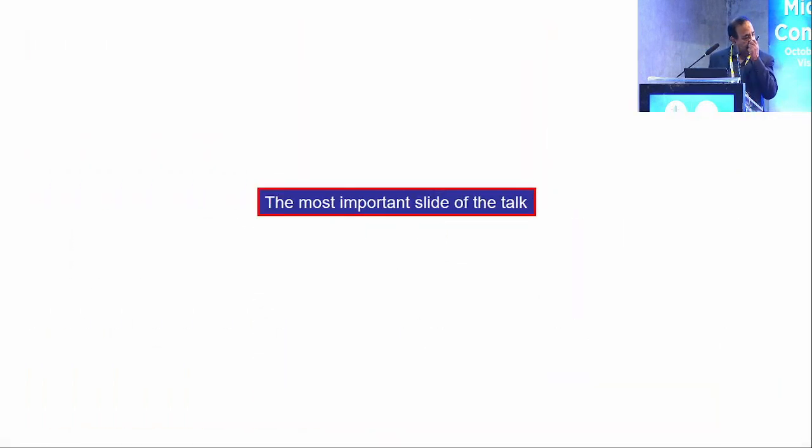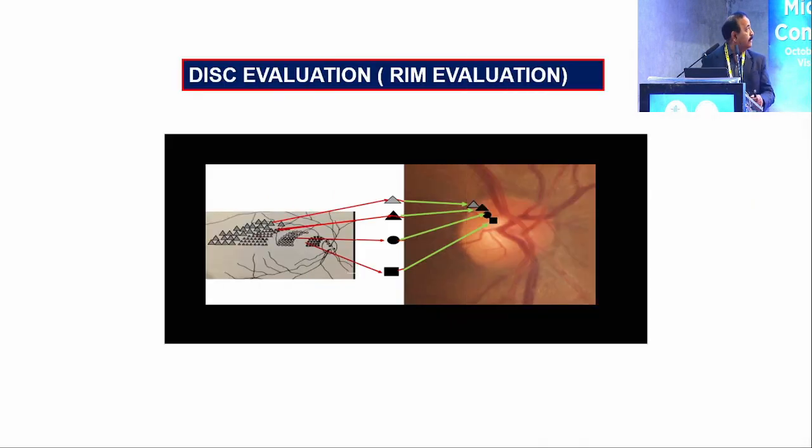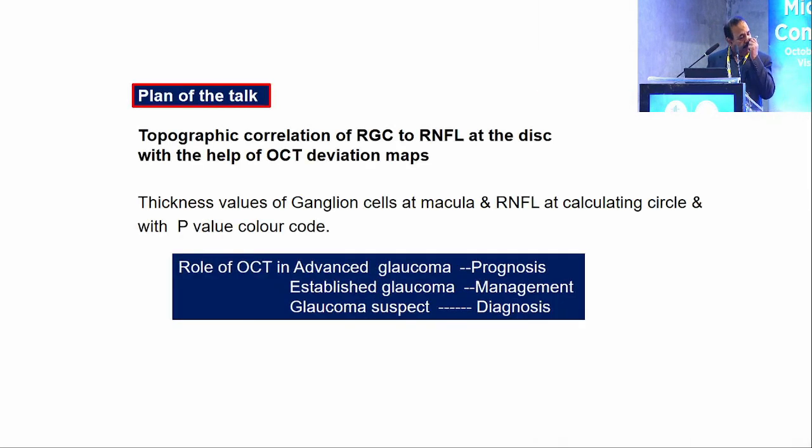The most important part in glaucoma is always evaluation of the disc. If you don't have the correct concept of evaluating the disc, you don't come across to the need for asking for OCT. My plan of the talk is: first I will talk about the topographic correlation of the RNFL and the visual field areas, the thickness values of the ganglion cell at the macula and RNFL at the calculating circle with p-value color code, and what is the role of OCT in advanced glaucoma, established glaucoma, and glaucoma suspect.